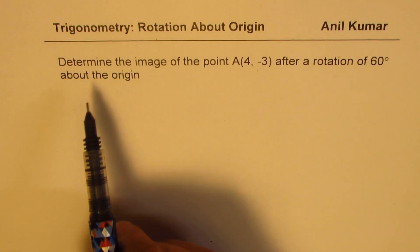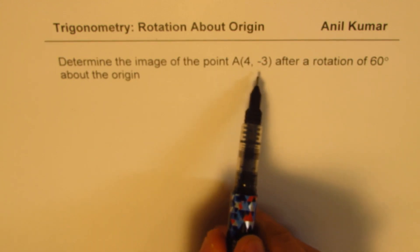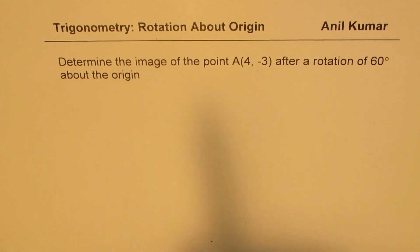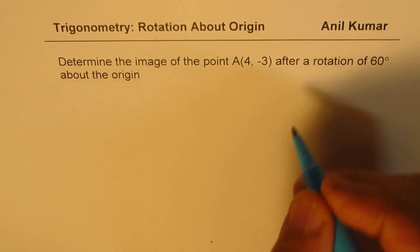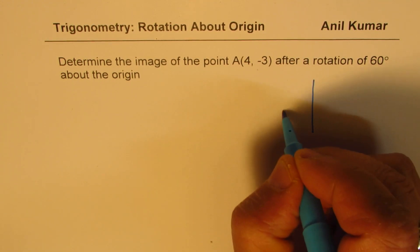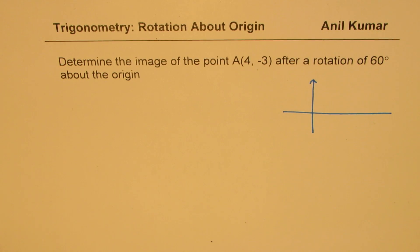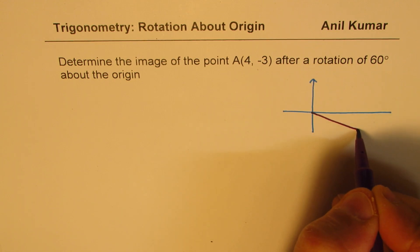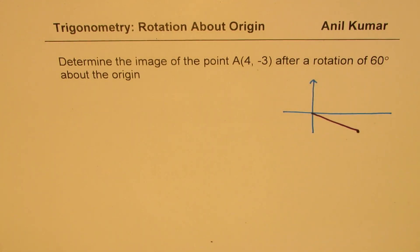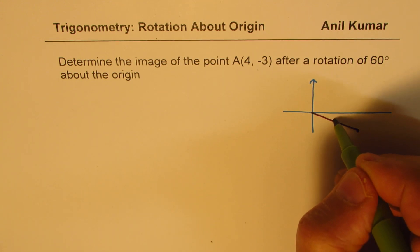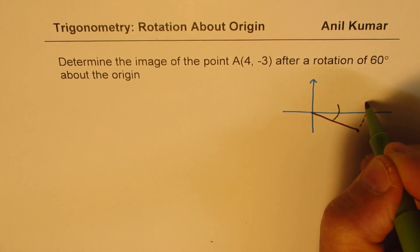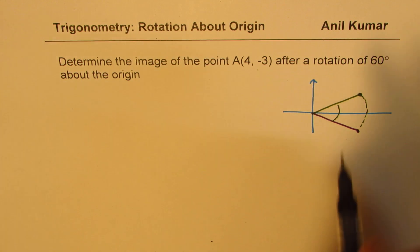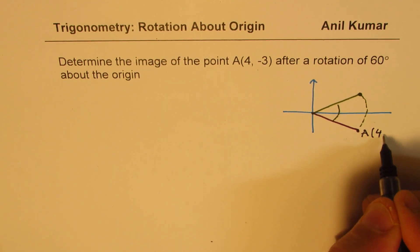So here is the question: determine the image of the point A(4, -3) after a rotation of 60 degrees about the origin. If you want, you can sketch what you have. You are given point A(4, -3), so somewhere in quadrant 4 you have a point. Now you are rotating this through an angle of 60 degrees — that becomes your final position.